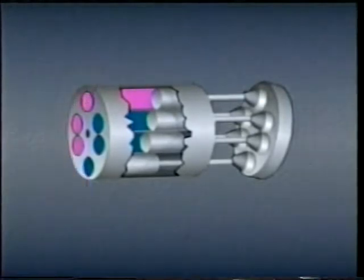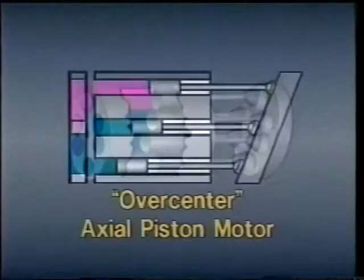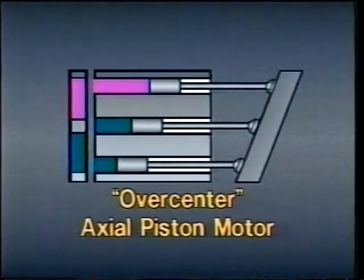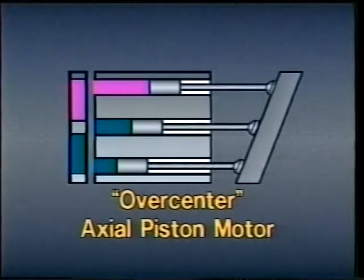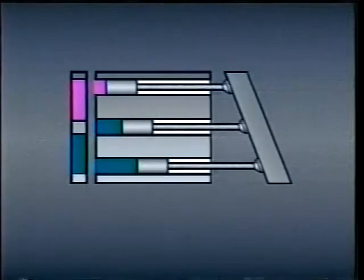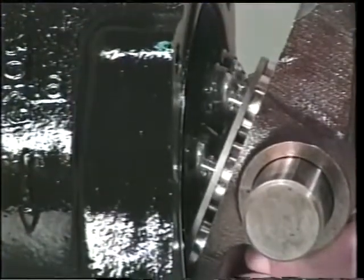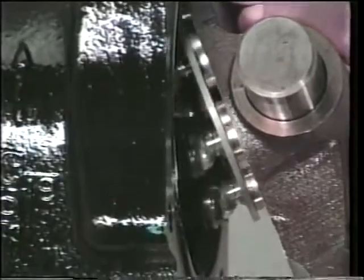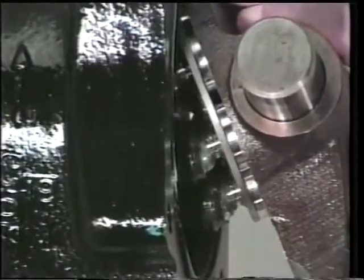Unlike vane motors and gear motors, piston motors can be reversed without changing the direction of flow through the motor. This type is called an over-center piston motor because all that's needed to reverse the direction of rotation is to tilt the swash plate past or over its center. As the swash plate is tilted toward vertical, the motor displaces less and less fluid. When the motor is restarted with the swash plate tilted over center, the piston shoes go back the other way, turning the cylinder barrel in the opposite direction and reversing the direction of the motor shaft.